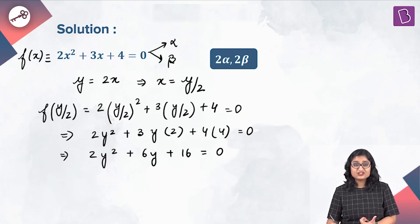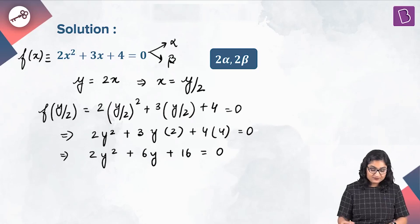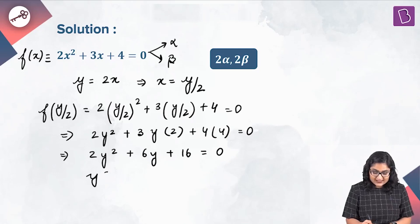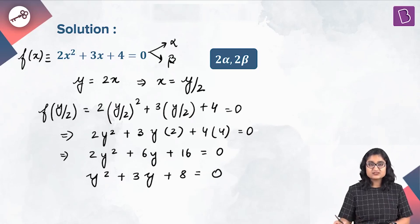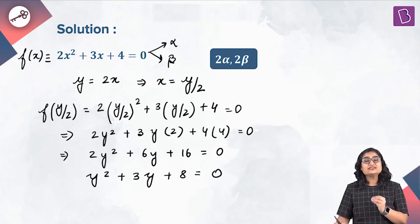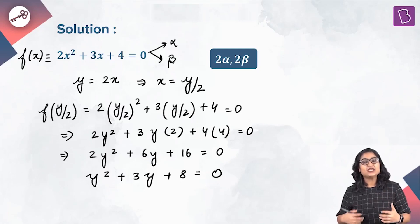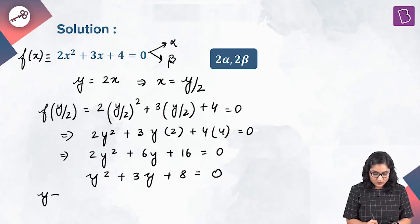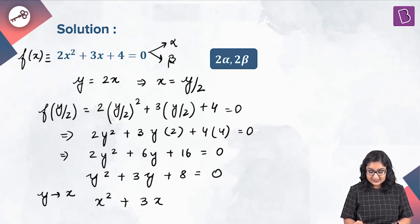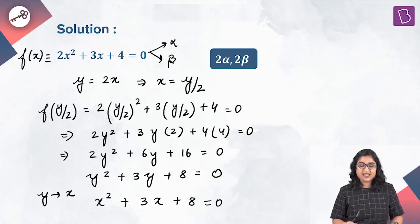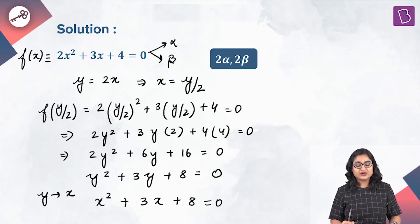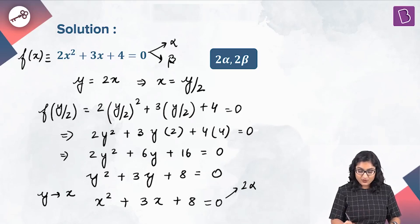Simplifying further by factoring out 2, what I will get is y squared plus 3y plus 8 equal to 0. Now we are going to replace y with x to get an equation in x. When I replace y with x, I will get the equation x squared plus 3x plus 8 equal to 0, and this is the required quadratic equation whose roots are of the form 2 alpha and 2 beta.